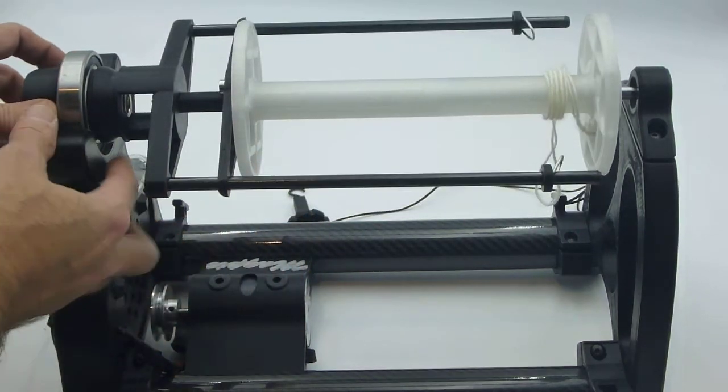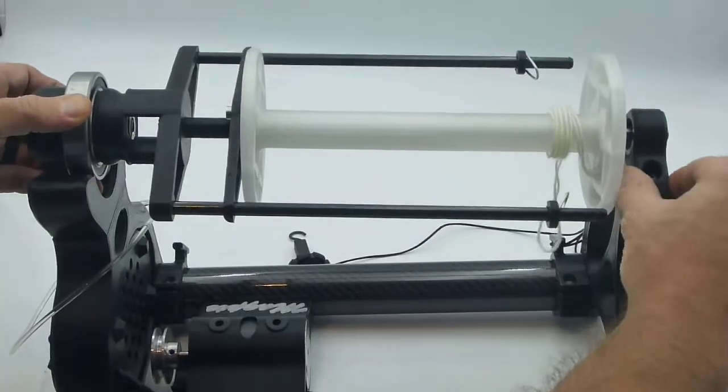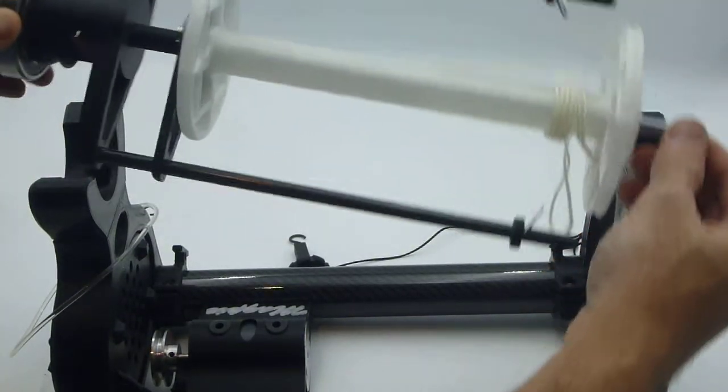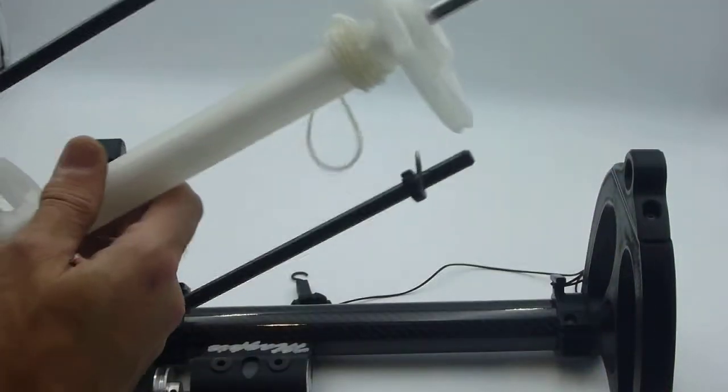Now the flyer is free to lift up here at the front and slide back just a little bit. And now we've removed our flyer and our bobbin. So we switch our bobbins out.